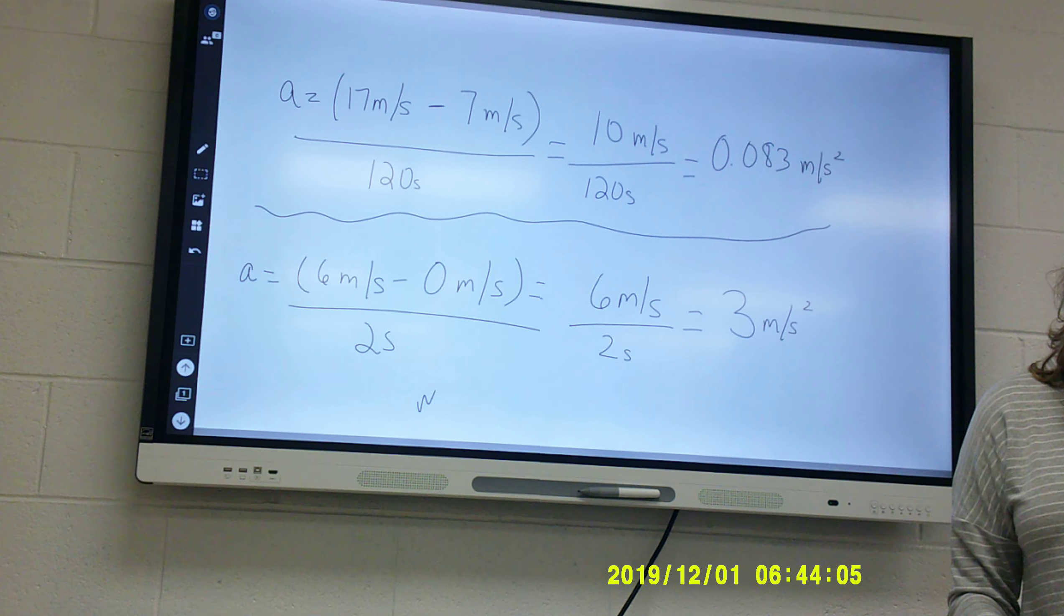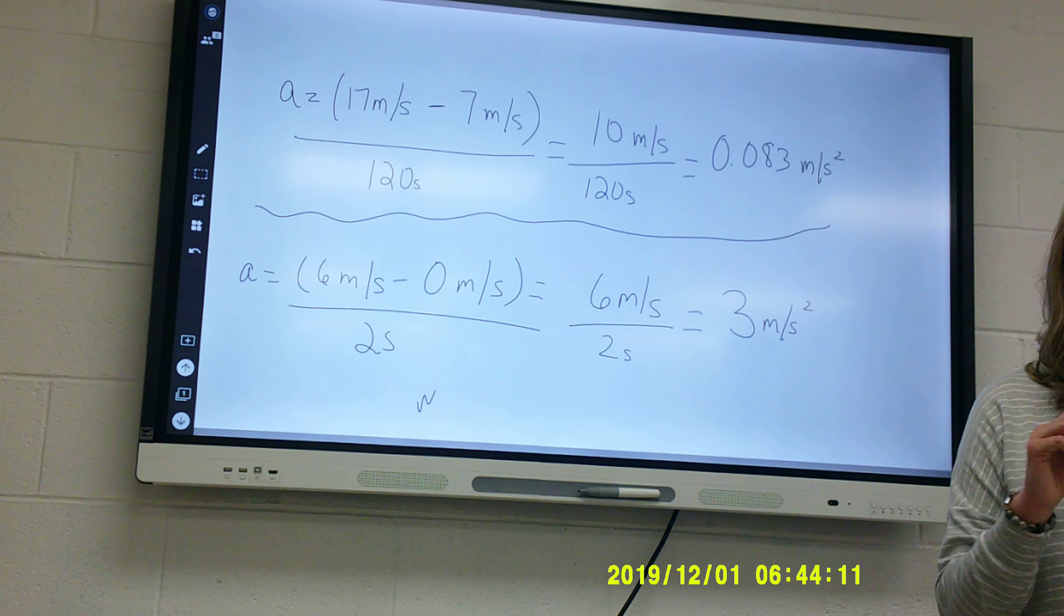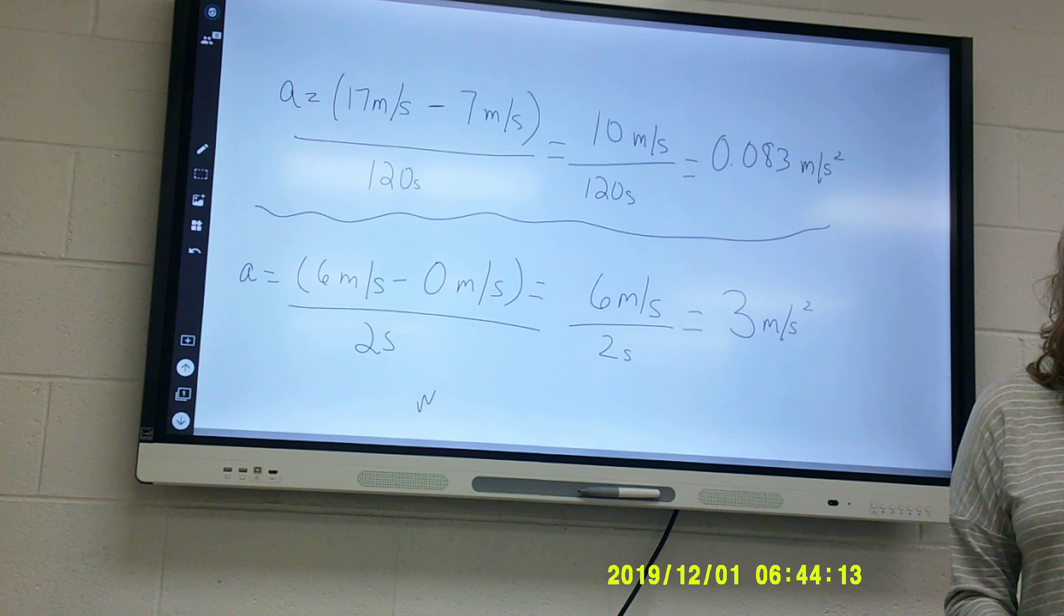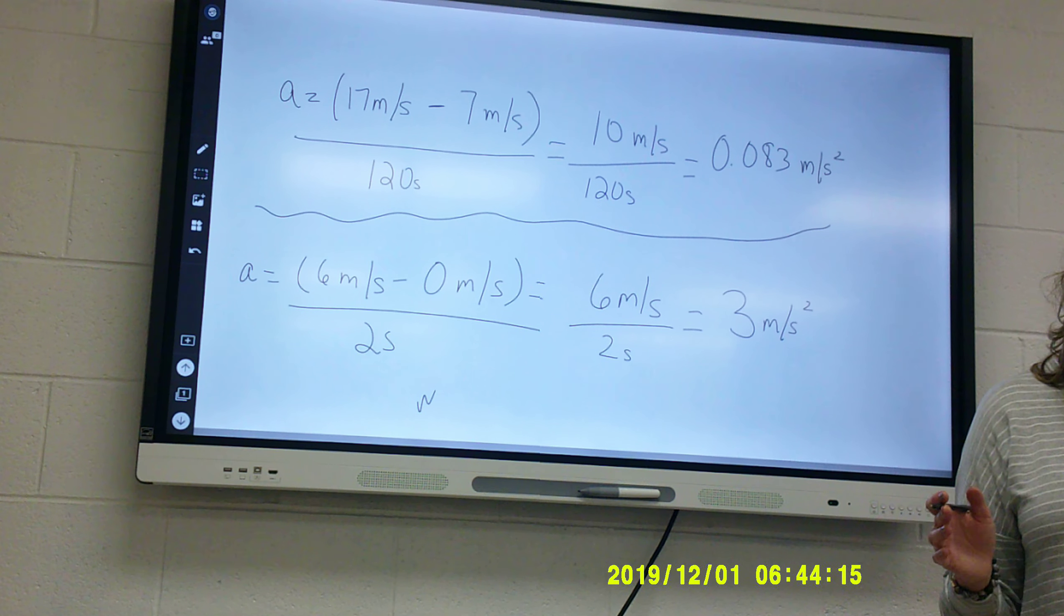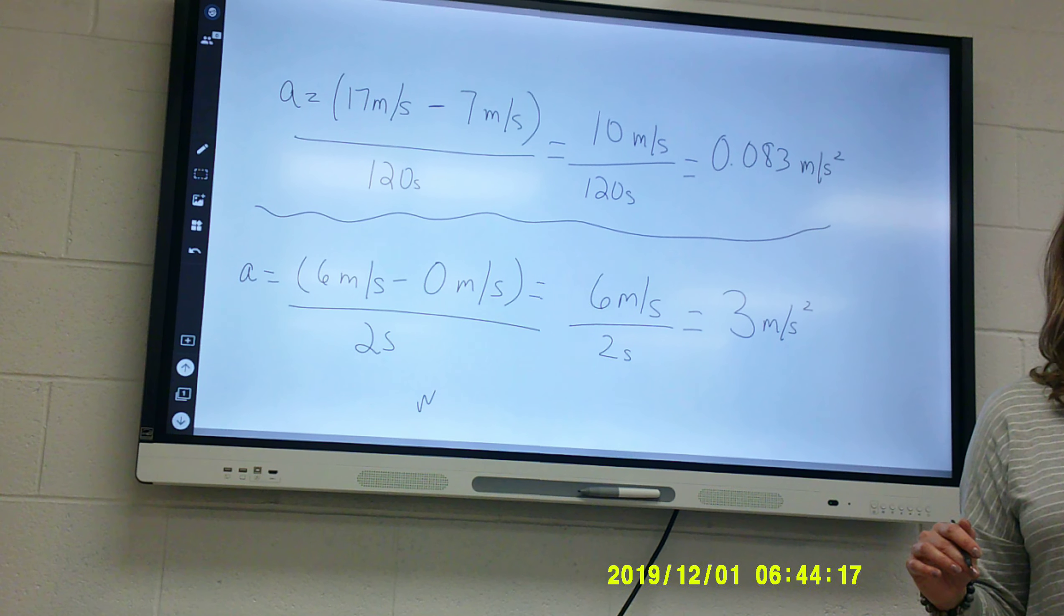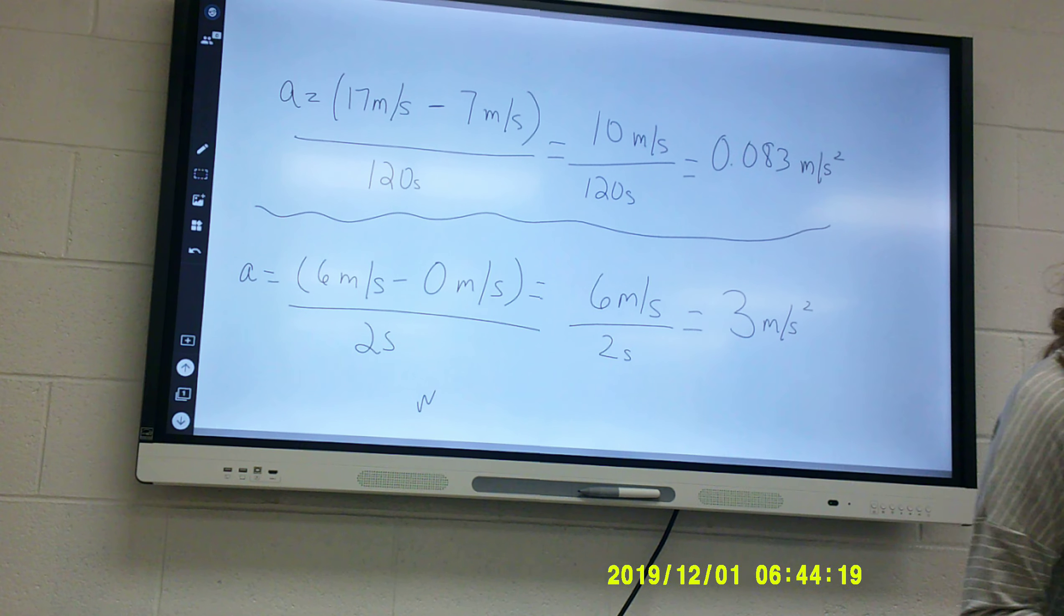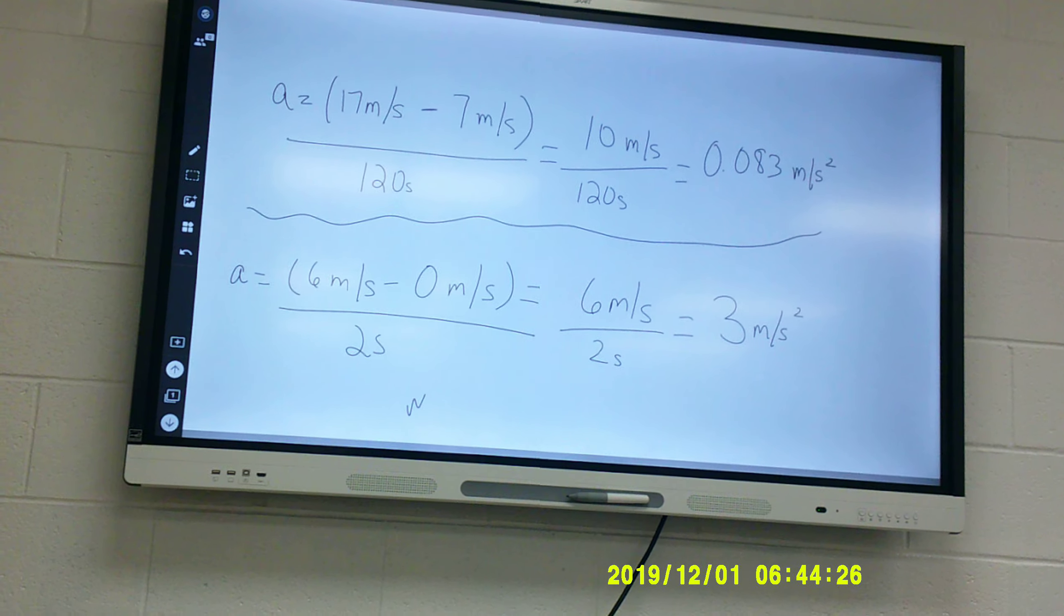A speed-time graph can be used to find acceleration. When the lines rise, the object is speeding up. When the line falls, it's slowing down. When it's a horizontal straight line, it's 0. It's not speeding up. It's not slowing down. It's a constant speed. Okay? I'm going to go ahead and give you the worksheet, which is actually going to be your assignment for tomorrow.